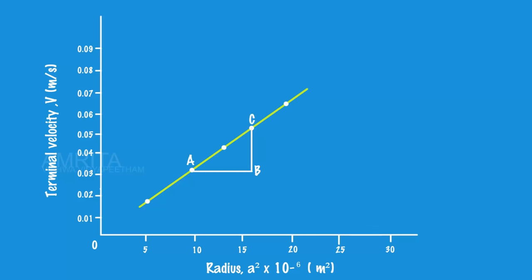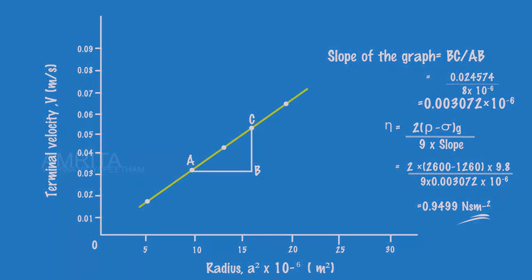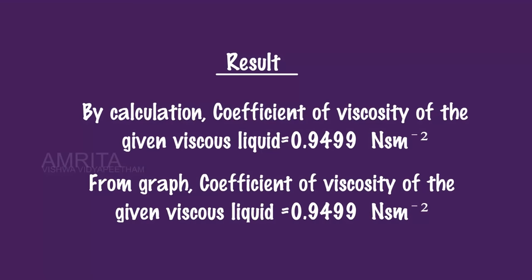The coefficient of viscosity of the liquid can be calculated using the slope of the graph in the relation η = 2(ρ-σ)G / (9×slope) and is found to be 0.9499 newton second per meter square. By calculation and from the graph, we can determine the coefficient of viscosity of glycerine as 0.9499 N·s/m².